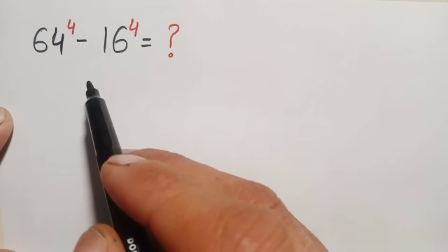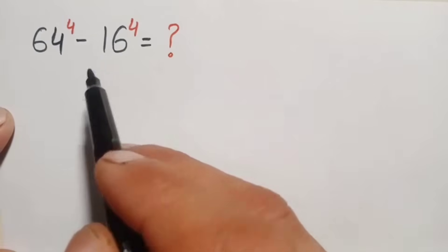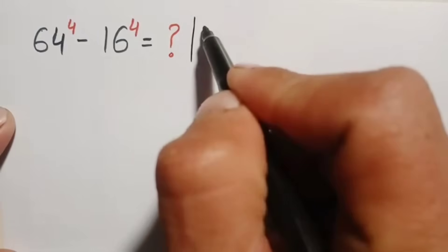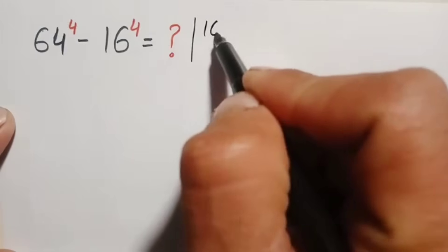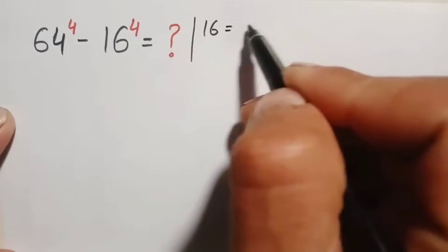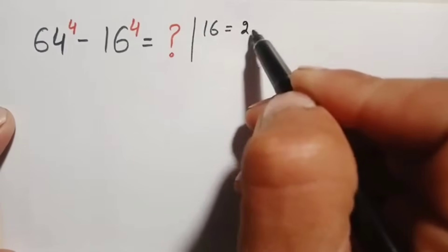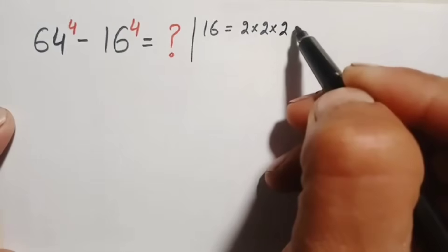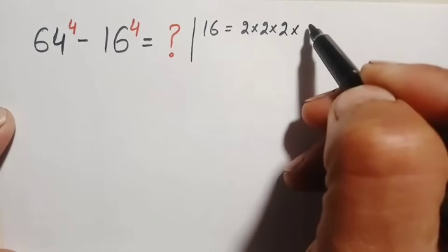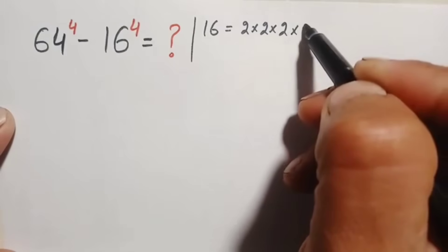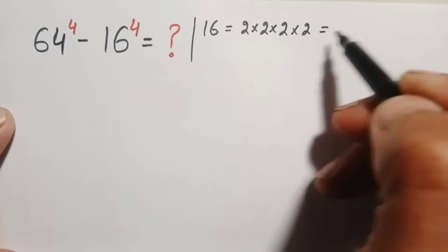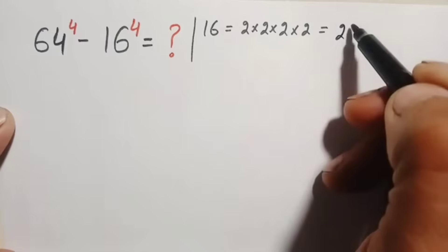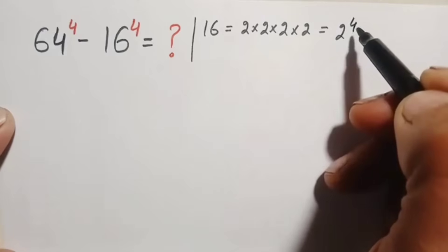First of all, we can write 16 as 2 times 2 is 4, 4 times 2 is 8, and 8 times 2 is 16. So 2 appears 4 times, and we can write this as 2 raised to the power 4 in exponential form.